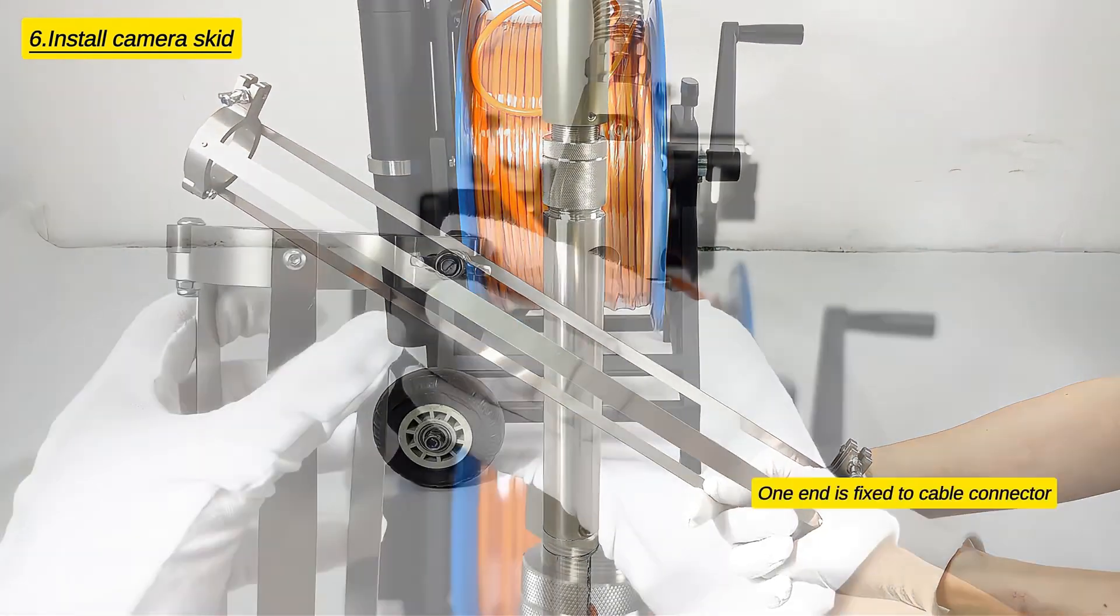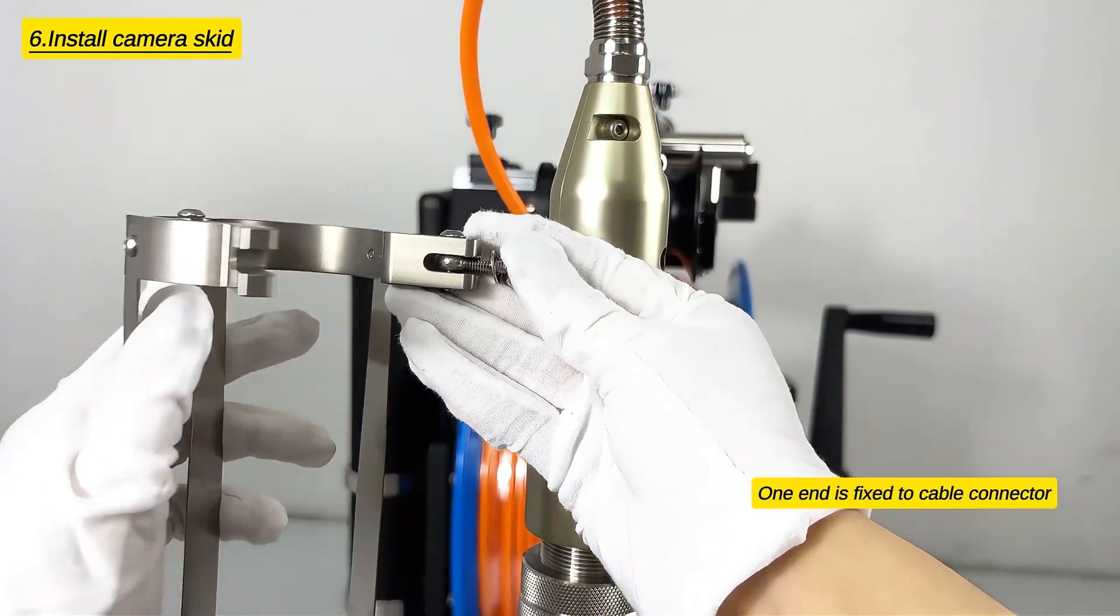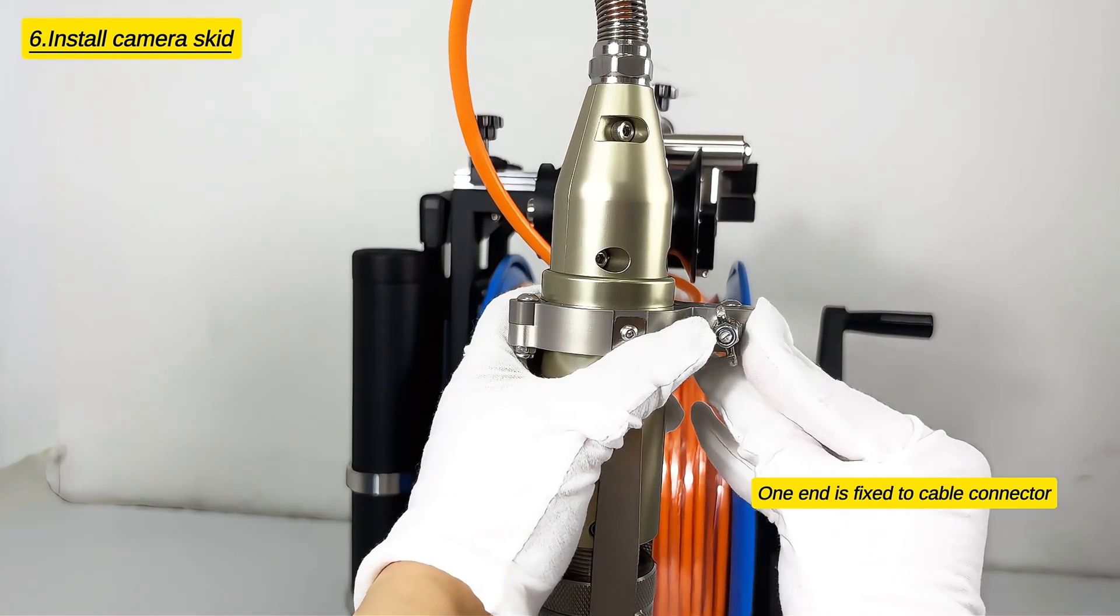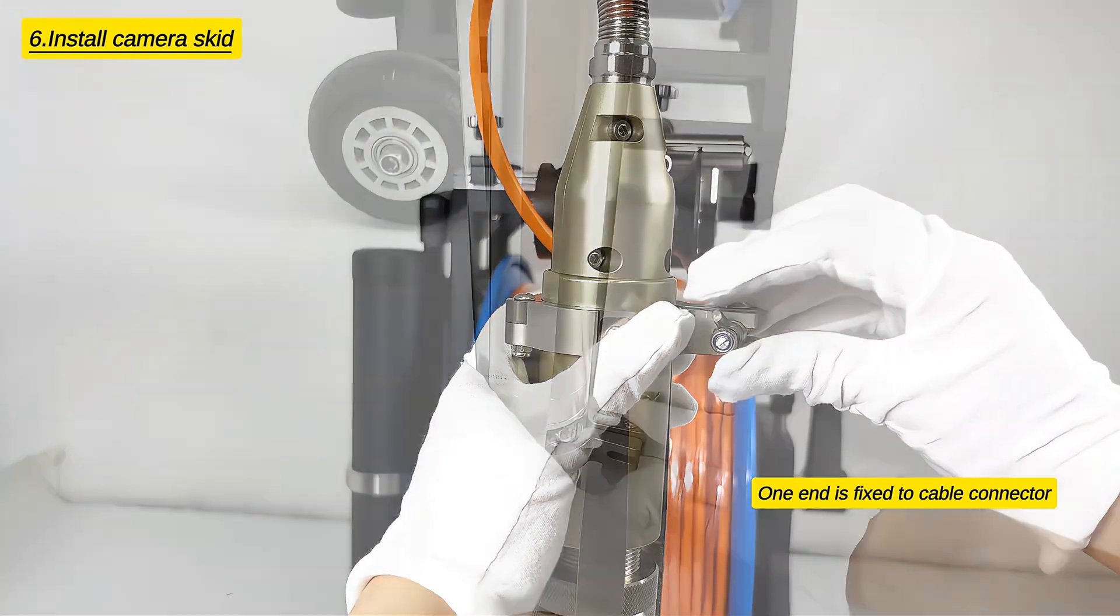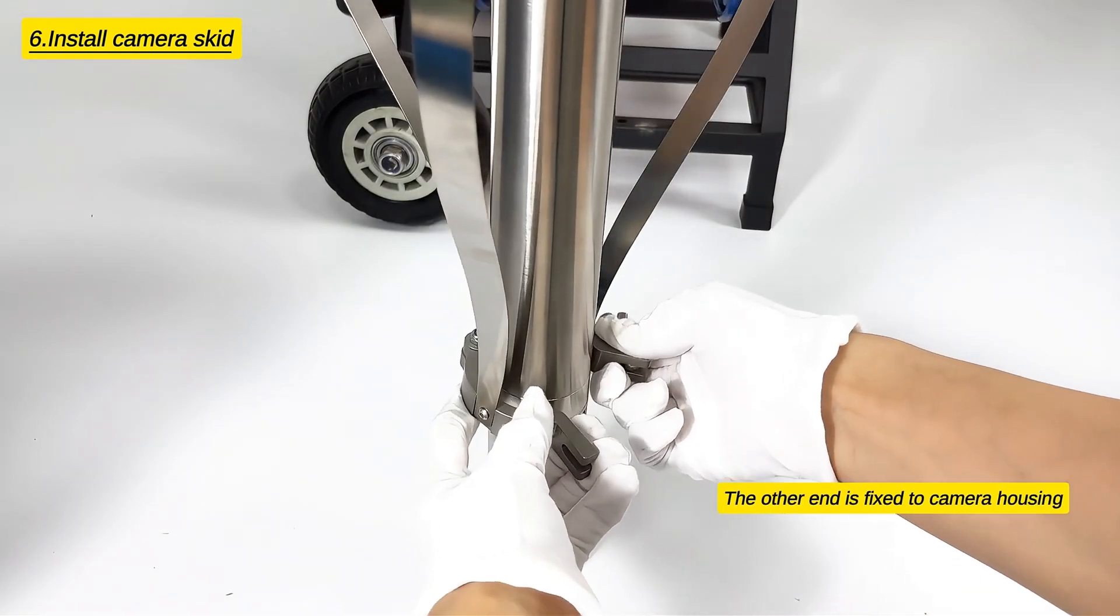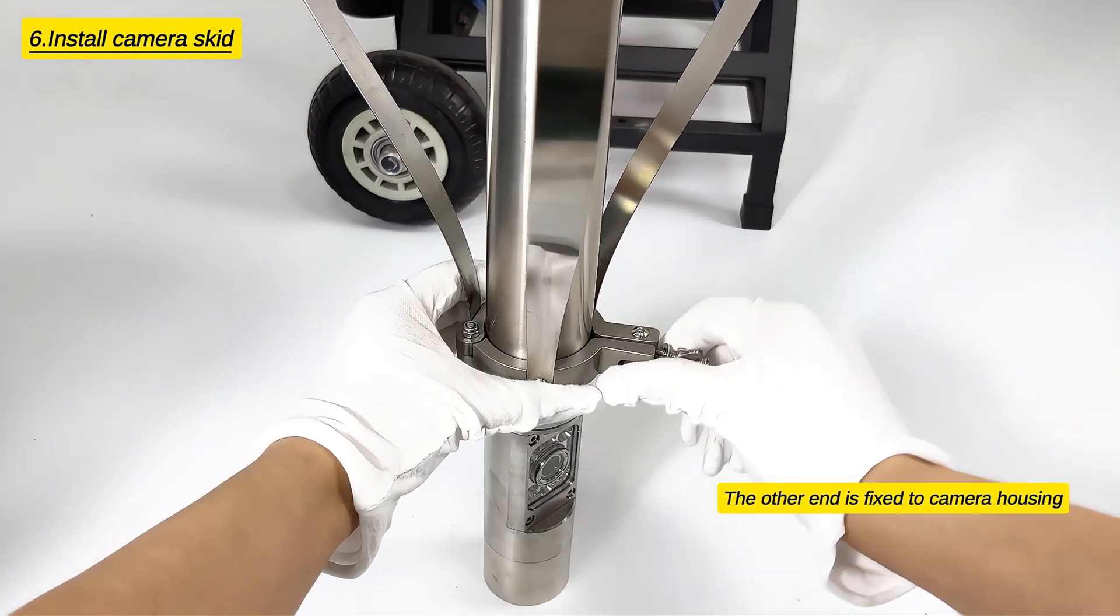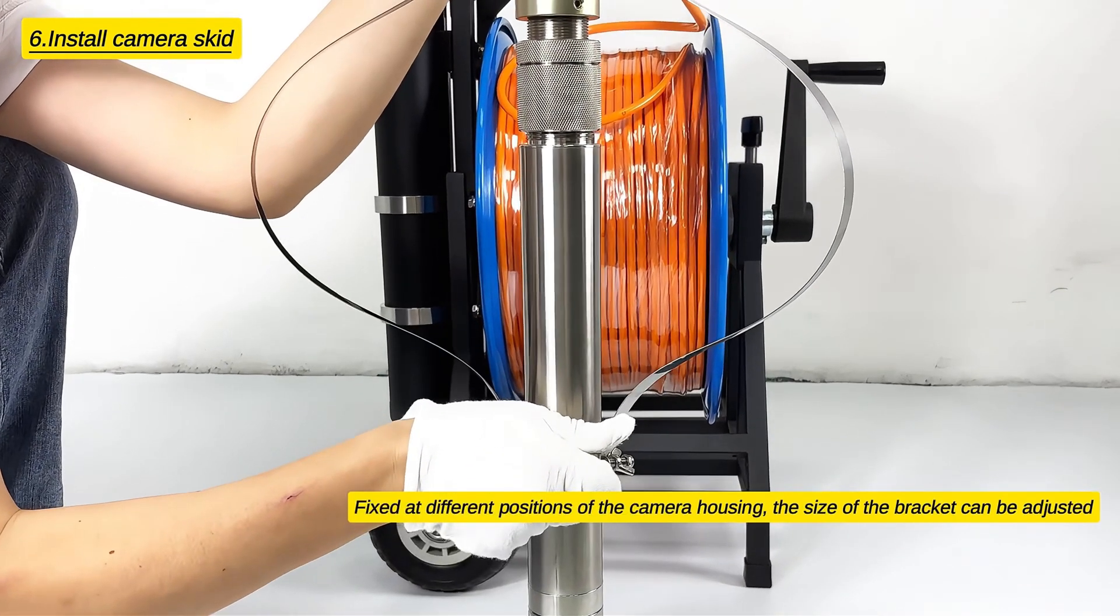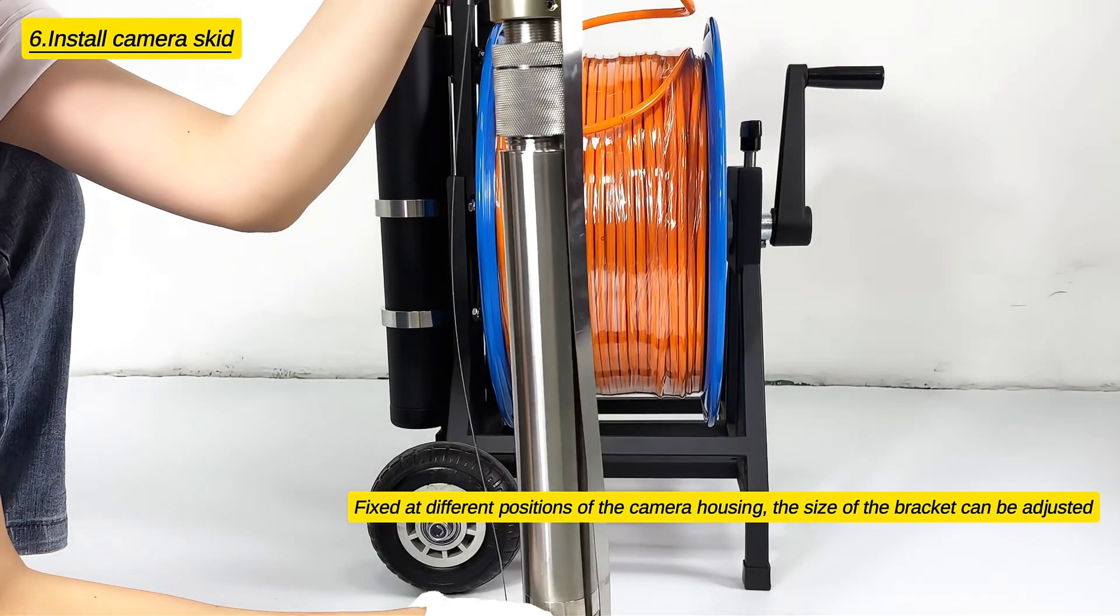Install camera skid. One end is fixed to cable connector, the other end is fixed to camera housing. Fixed at different positions of the camera housing, the size of the bracket can be adjusted.